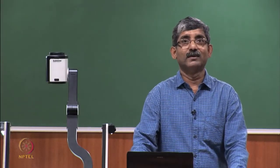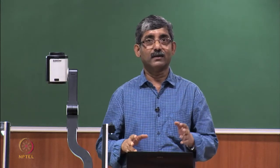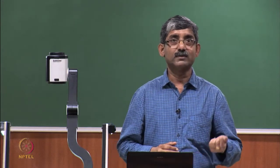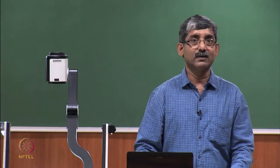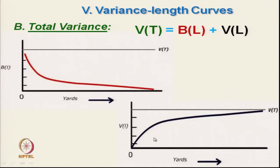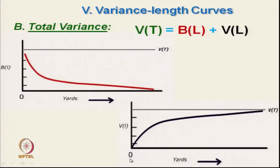We will continue with the variance length curve, called the VL curve. There are two types: between length (BL) and within length (VL). As the yarn cut length increases, the between length reduces; on the other hand, as the cut length increases, the variance within length increases. The total variance is the summation of between length and within length.